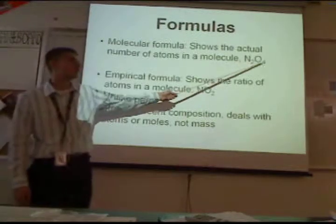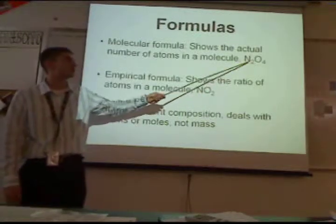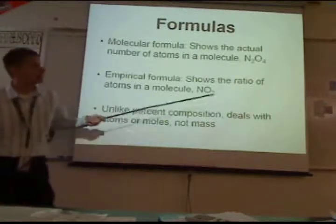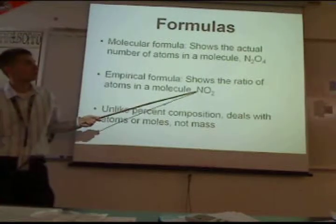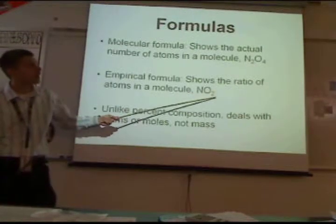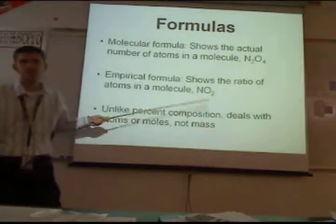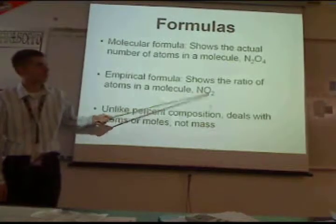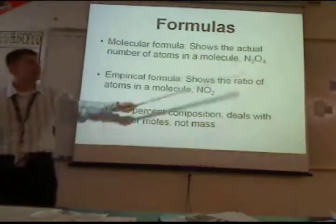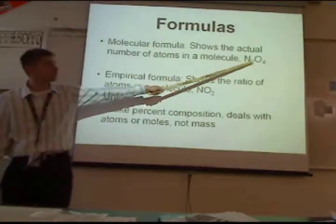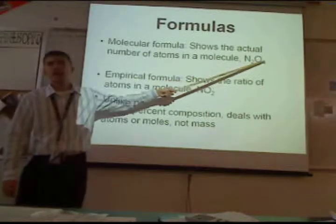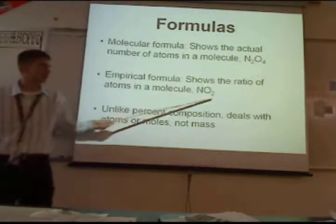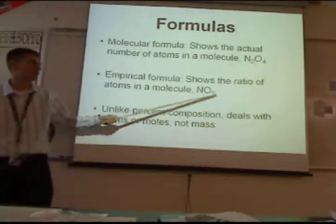So N2O4: you have two nitrogens and four oxygens exactly. Whereas empirical shows you have twice as many oxygens as nitrogen — a one to two ratio. So N2O4 is molecular, and this can be reduced down to NO2, which would be the empirical formula.